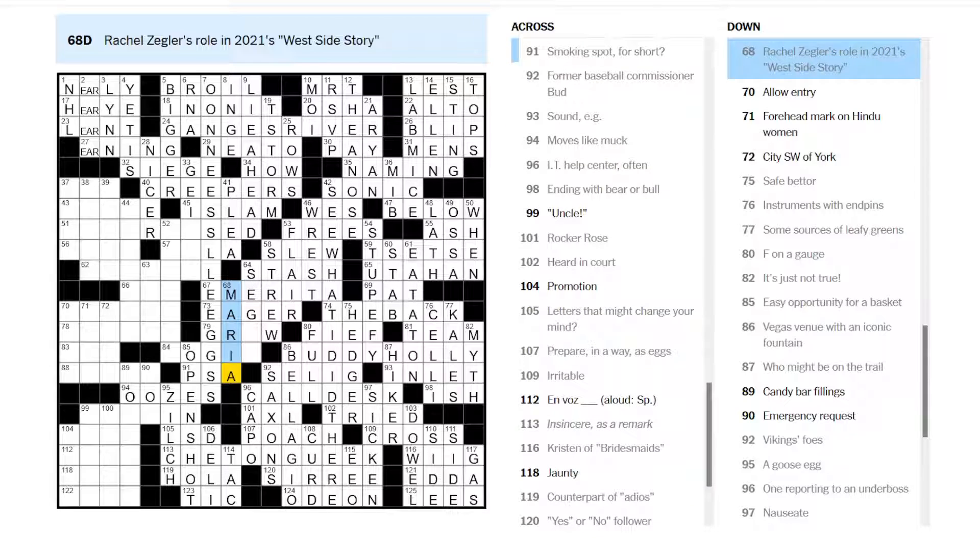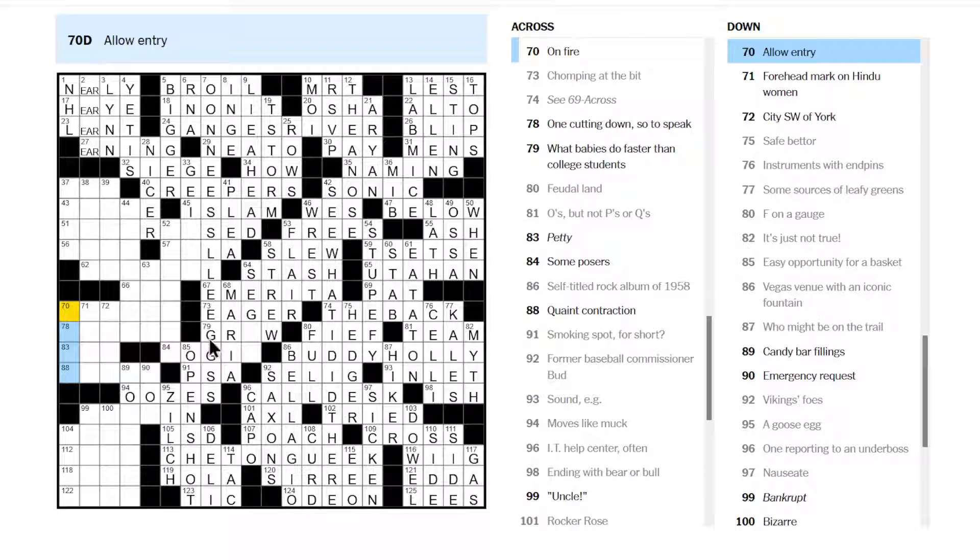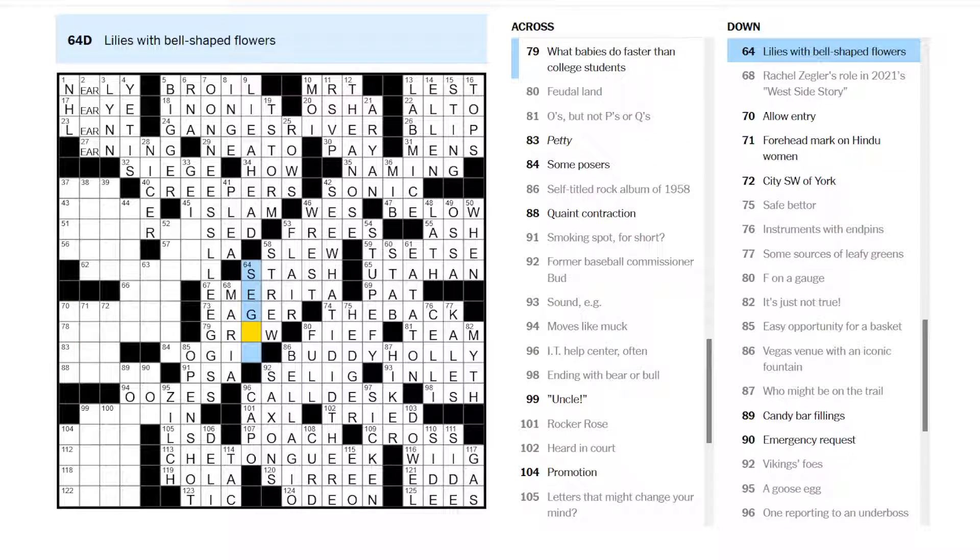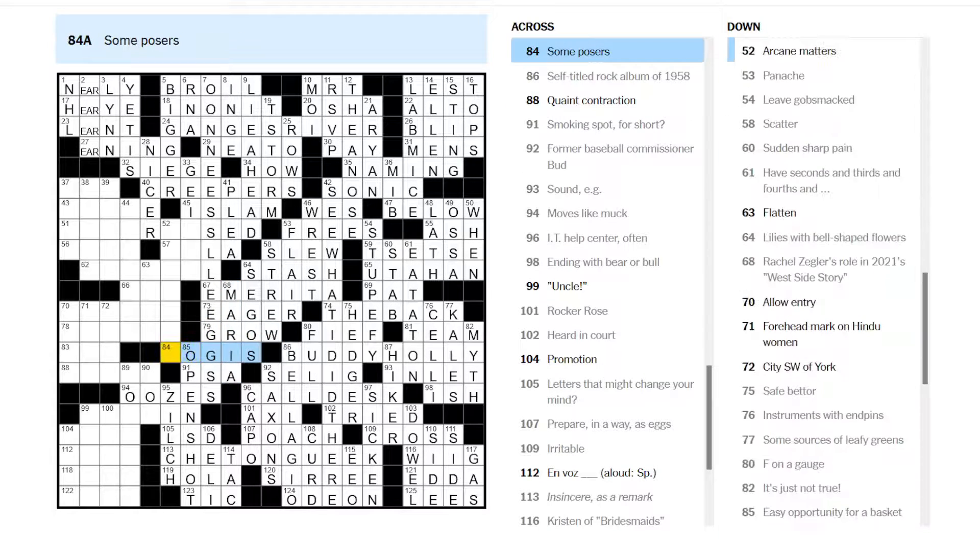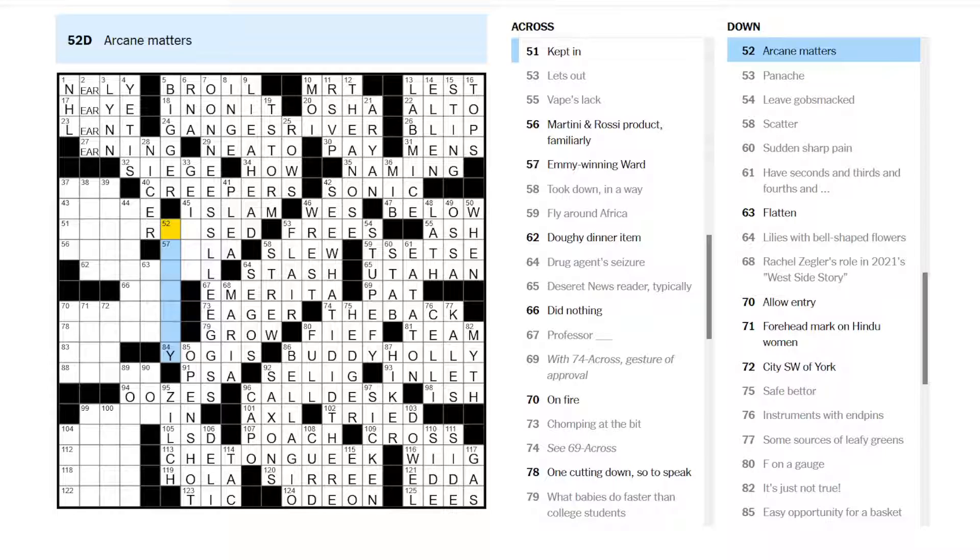Rachel Ziegler's role in 2021's West Side Story. Must be Maria. I just saw that last week. Good movie. That's not what I meant. Lilies with bell-shaped flowers. Well, there's a type of lily called a Sego lily. S-E-G-O. What babies do faster than college students? Grow. Some posers are yogis, as in yoga poses.